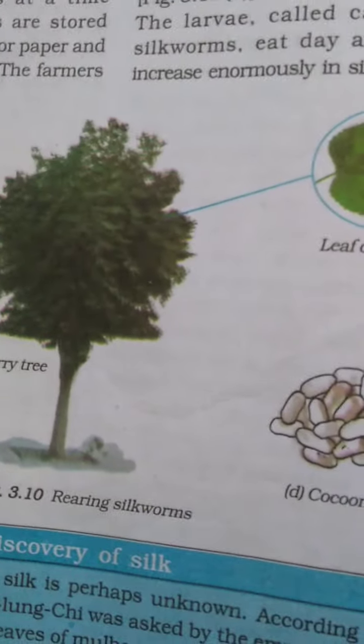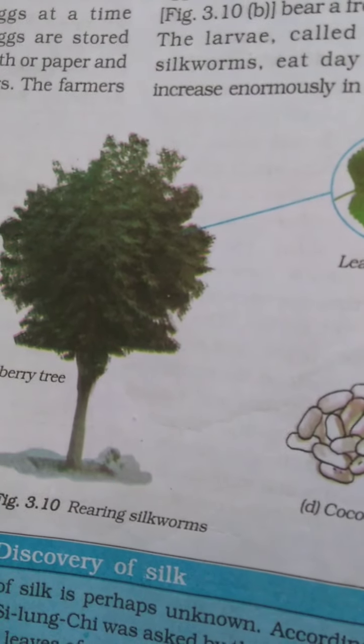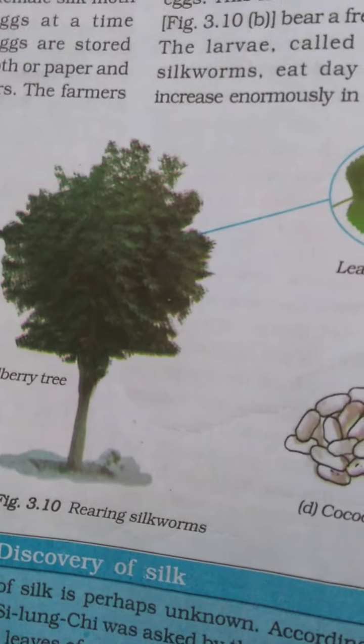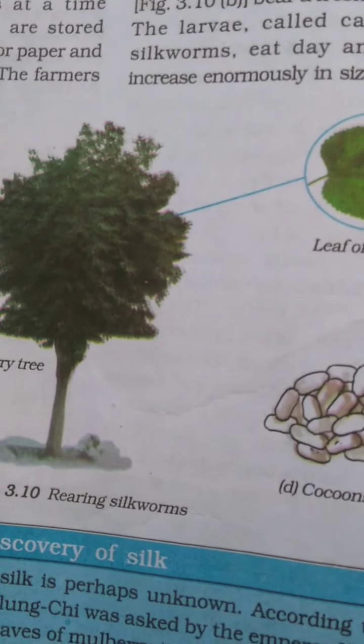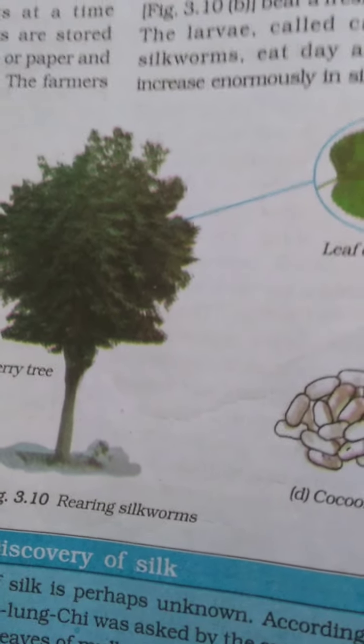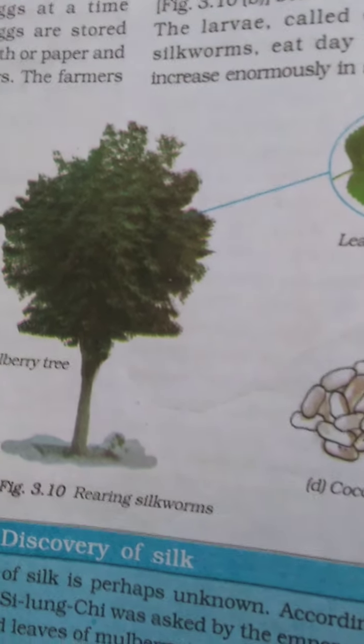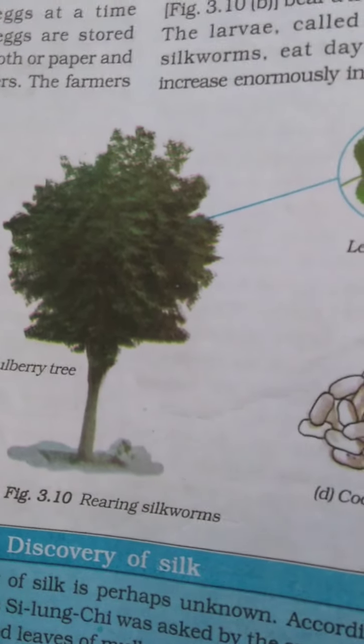Here we are going to discuss about how we get silk from cocoon. We understood that we get silk from cocoon, but how we get silk from cocoon? What is the process? Obviously for obtaining silk, the silk moths are reared and then cocoons will be taken or collected to get the silk thread.